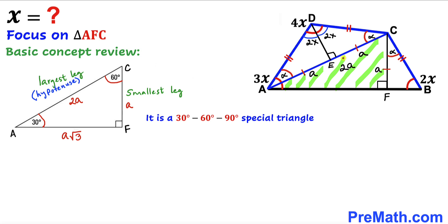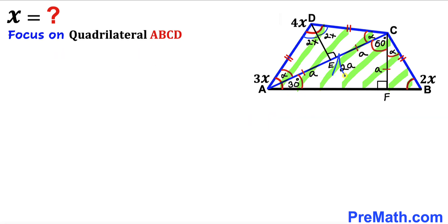Returning to triangle AFC: the largest leg (hypotenuse AC) is 2a and the smallest leg FC is a. This matches the 30-60-90 ratio, so we conclude that angle FAC is 30 degrees and angle ACF is 60 degrees. Now, focusing back on quadrilateral ABCD, we see that angle DAB equals alpha plus 30 degrees.